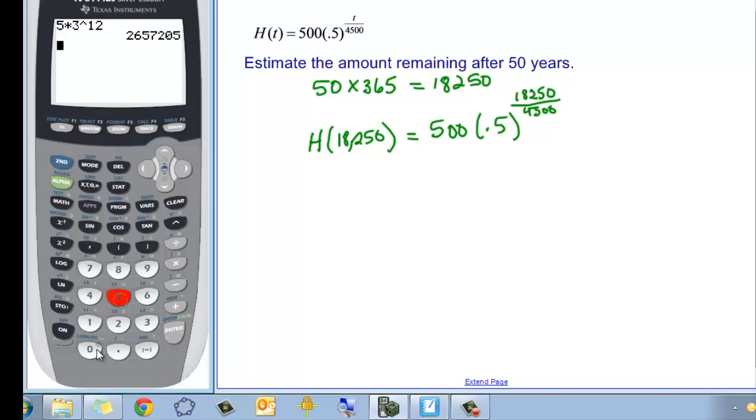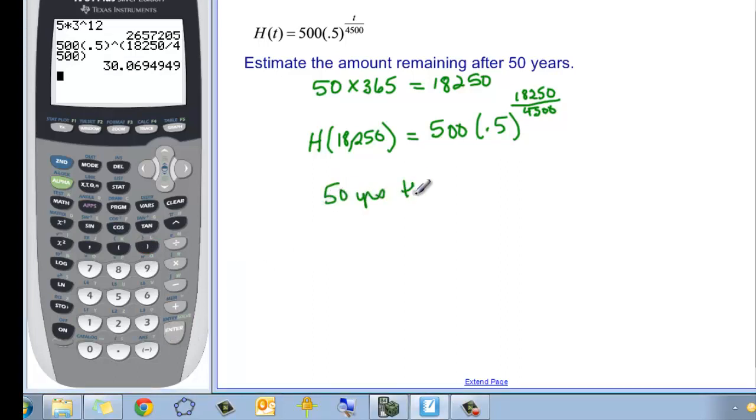So if we come to our calculator, we say 500 times 0.5 caret, but we need our fraction exponent in parentheses. So 18,250 divided by 4,500. And then close the parentheses for that exponent. And we find out that in 50 years, there are 30.07 atoms of hydrogen left.